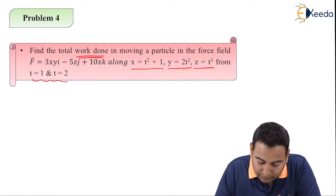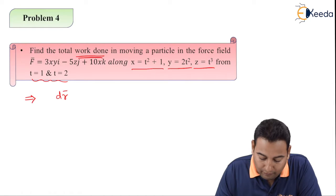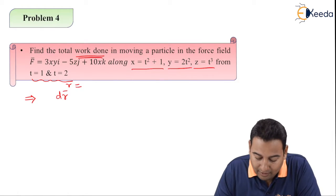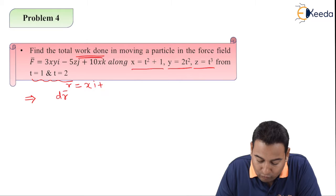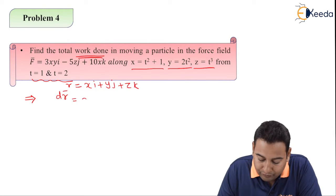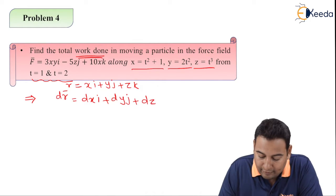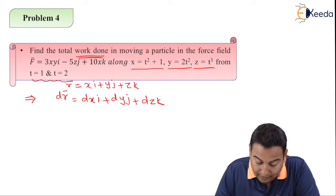First of all, what is dr bar? For dr bar we need to have r bar. What is r bar? xi plus yj plus zk. What is dr bar? dxi plus dyj plus dzk. This is dr bar.